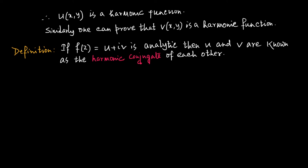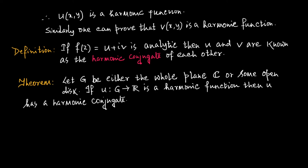A pertinent question: for any harmonic u(x,y), is it necessary that a harmonic conjugate will exist? In other words, for every harmonic function u(x,y), can we get another harmonic function v(x,y) such that u(x,y) plus i·v(x,y) is analytic? The following theorem answers this: let G be either the whole complex plane or some open disk in the complex plane — if a real-valued function u is harmonic, then u has a harmonic conjugate.